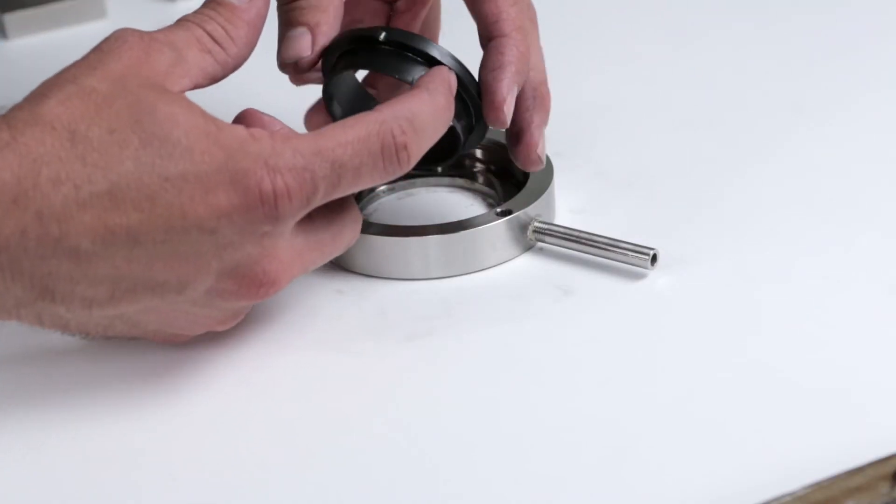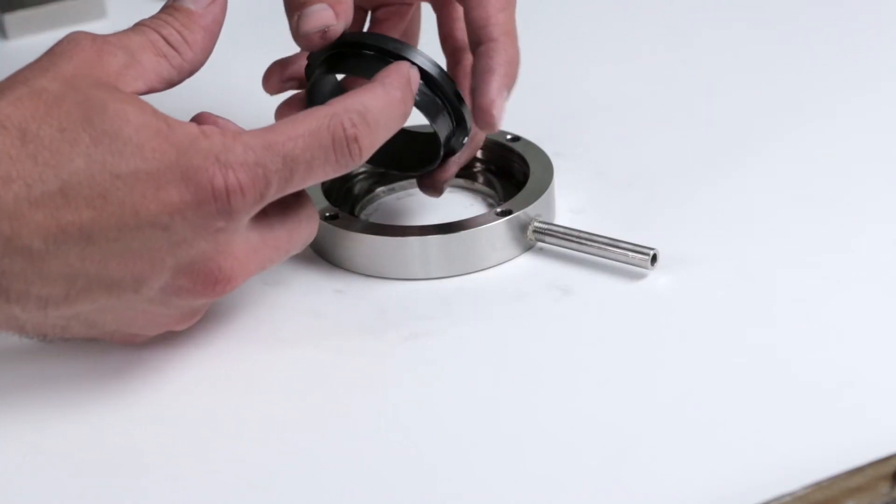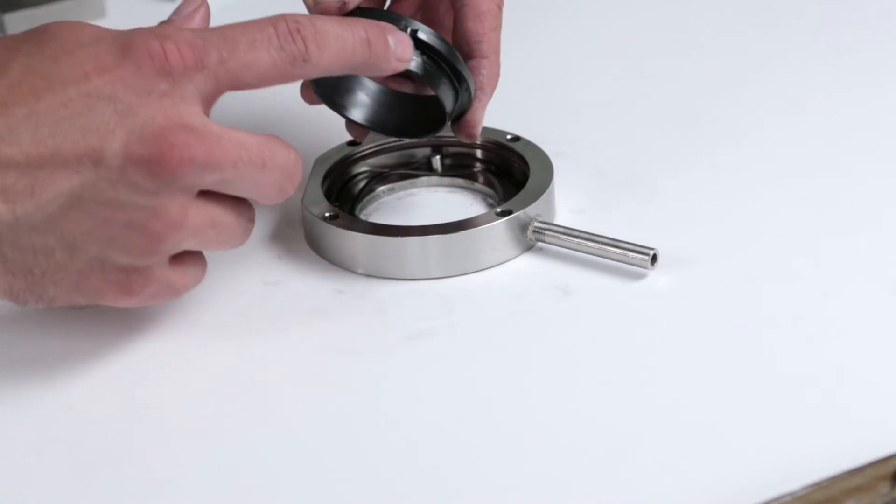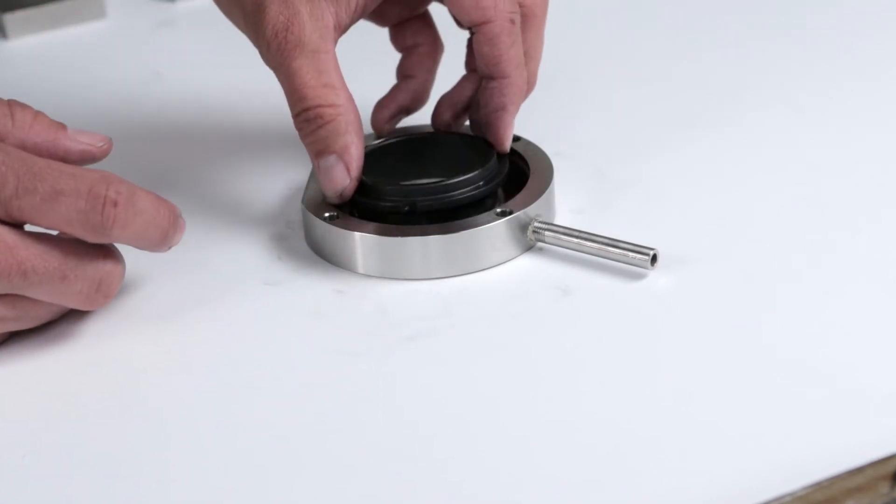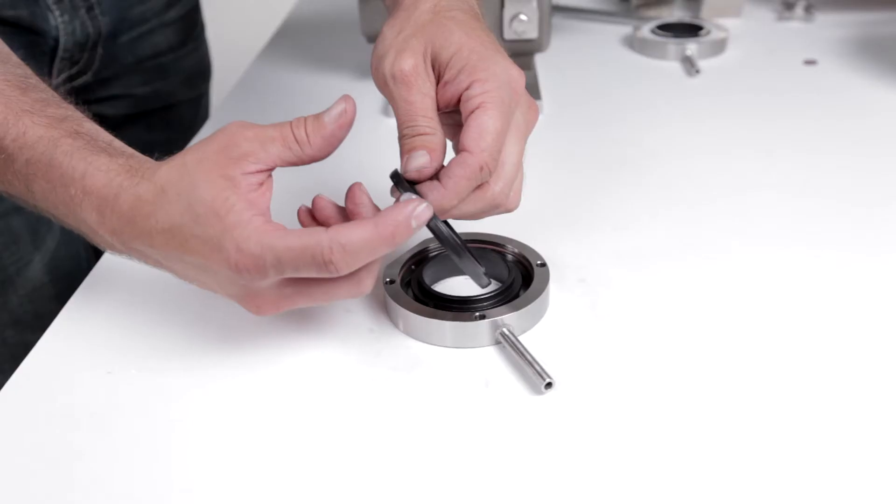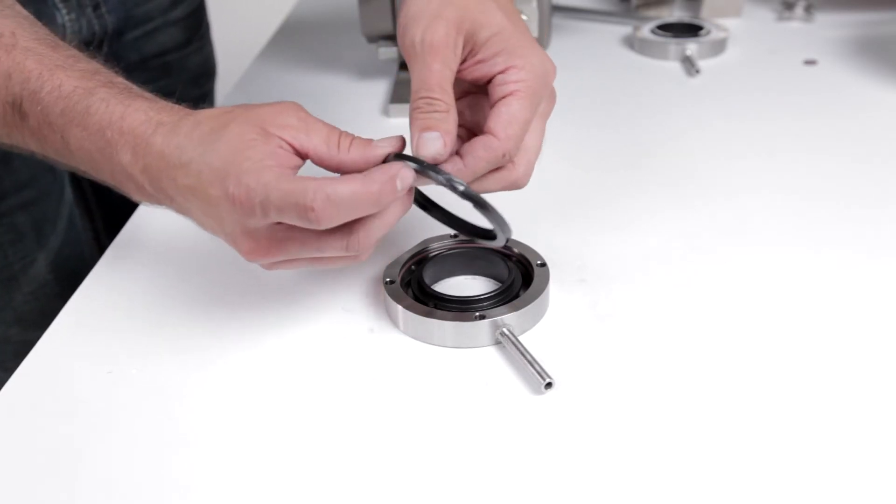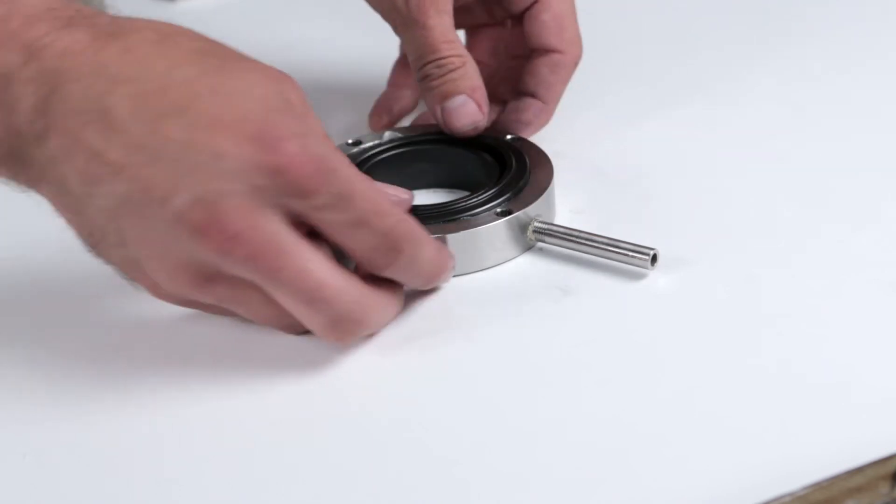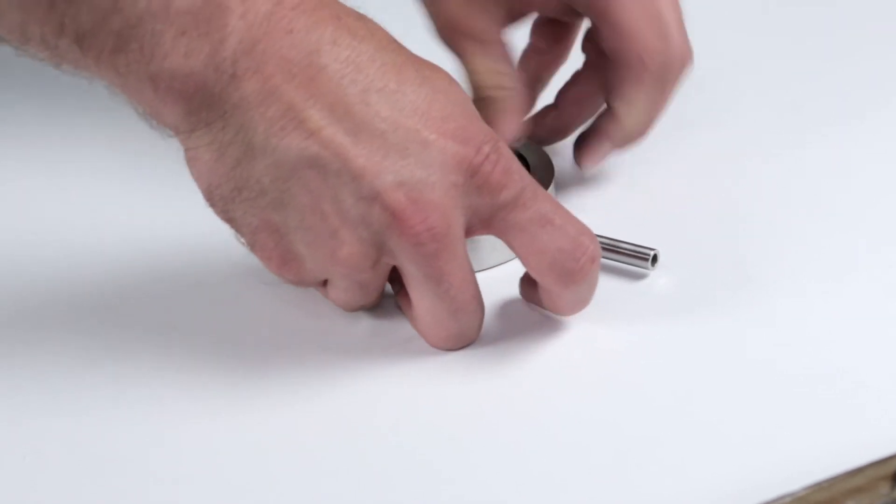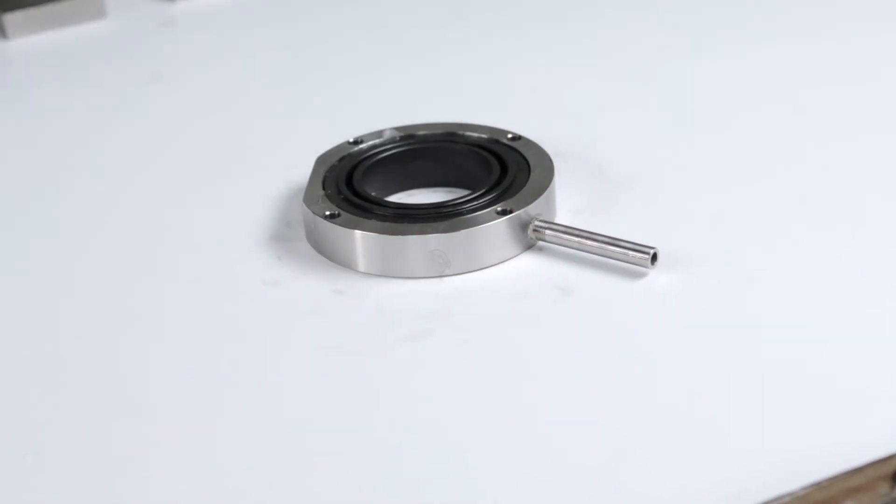Lubricate the outer edge of the flush seal or seal insert and place into the seal housing. Be sure to fit the notches around the pins. Press the seal to check for compression.